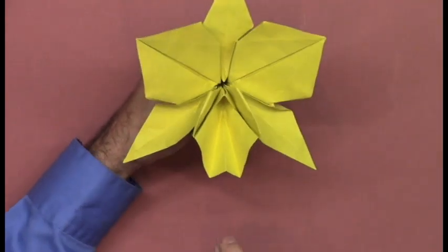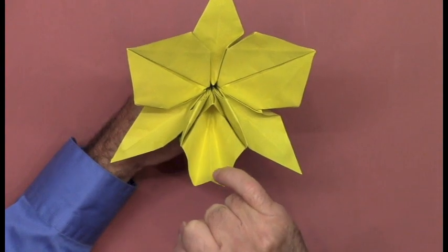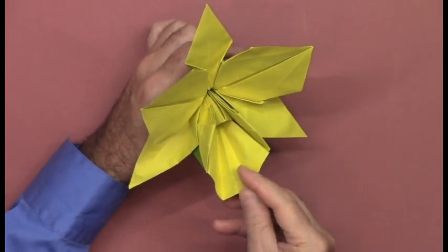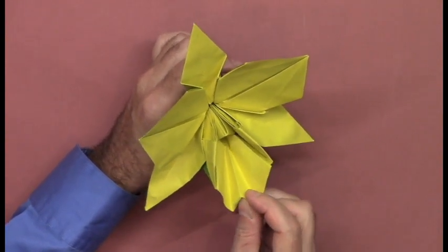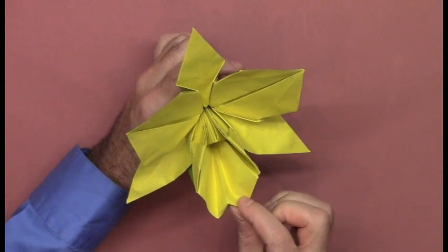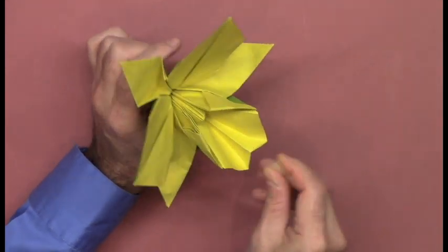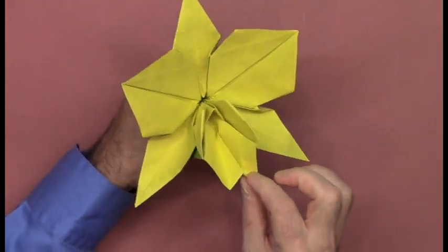So now you have three creases, valley, mountain, valley. And there's often a little cleft inside that bottom part of the lip. So we're going to inside reverse fold just a little bit here to approximate that. And there you see that little cleft.